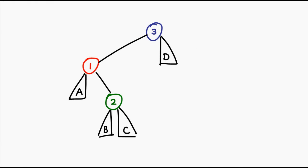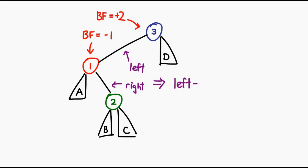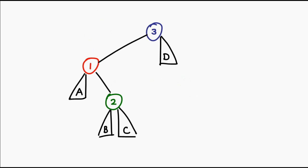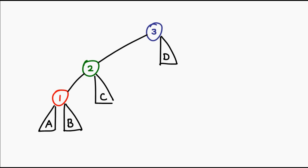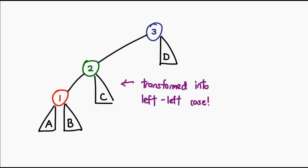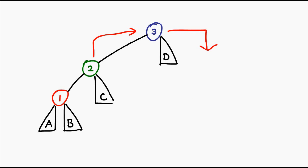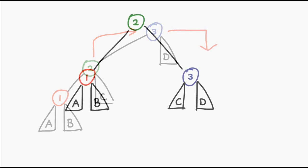What if our first balance factor is positive 2 but the second one is negative 1? This case is called the left-right case, and unfortunately one balancing operation isn't enough to fix it. However, one balancing operation is enough to reduce this to a known problem. By performing a left rotation on the left child node, we turn the left-right case into the left-left case. Then, by performing a right rotation on the topmost node, we have balanced the tree.